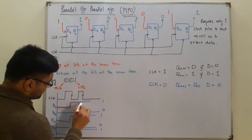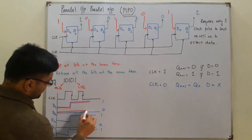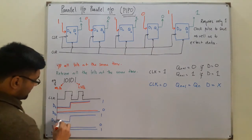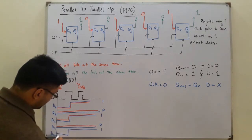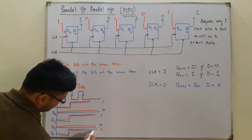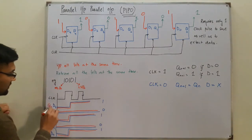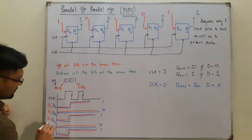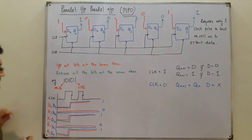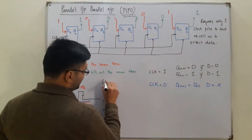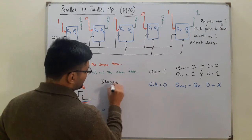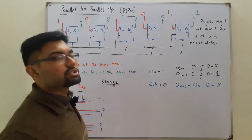The outputs Q4, Q3, Q2, Q1, and Q0 are all available simultaneously and are the same as the inputs. This is why PIPO is the most widely used configuration for storage — it requires fewer clock pulses and is simpler to understand.